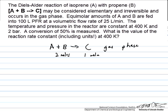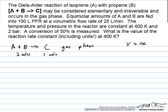We're given that the PFR has a volume of 100 liters and a volumetric flow rate of 25 liters per minute.